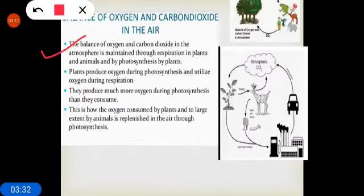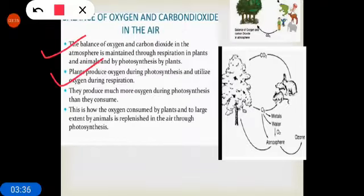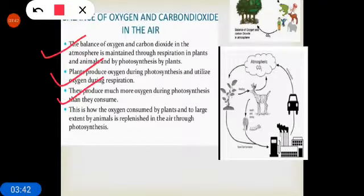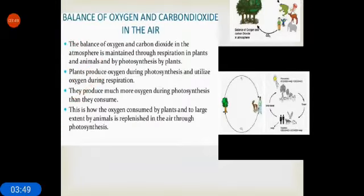Plants produce oxygen during photosynthesis and utilize oxygen during respiration. They produce much more oxygen during photosynthesis than they consume. This is how the oxygen consumed by plants and to large extent by animals is replenished in the air through photosynthesis.